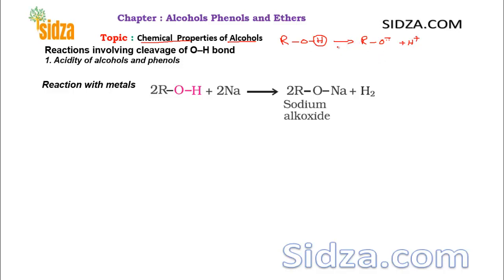Because of their acidic nature, alcohols can react with some active metals like sodium, potassium, and magnesium. Here the hydrogen will be displaced by the sodium ion. What you get is a sodium alkoxide — the sodium salt of an alcohol — and hydrogen is released as H₂ gas.